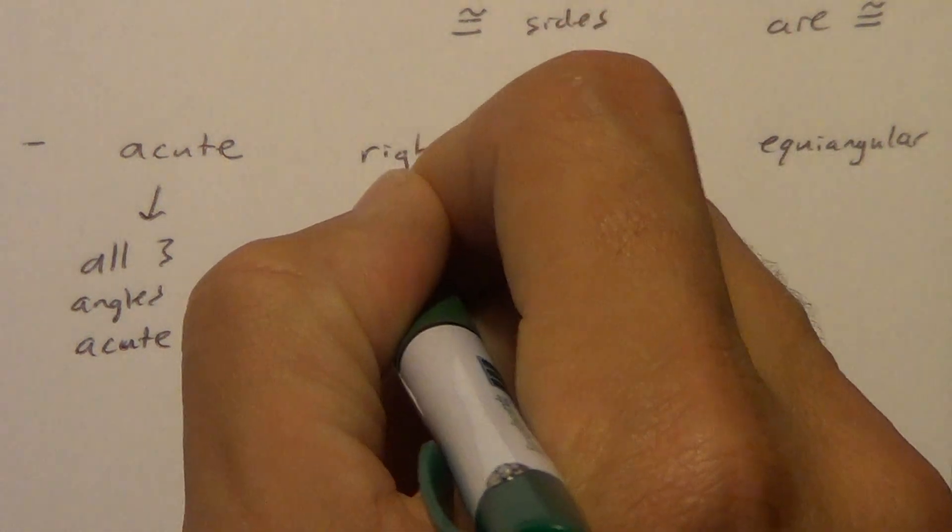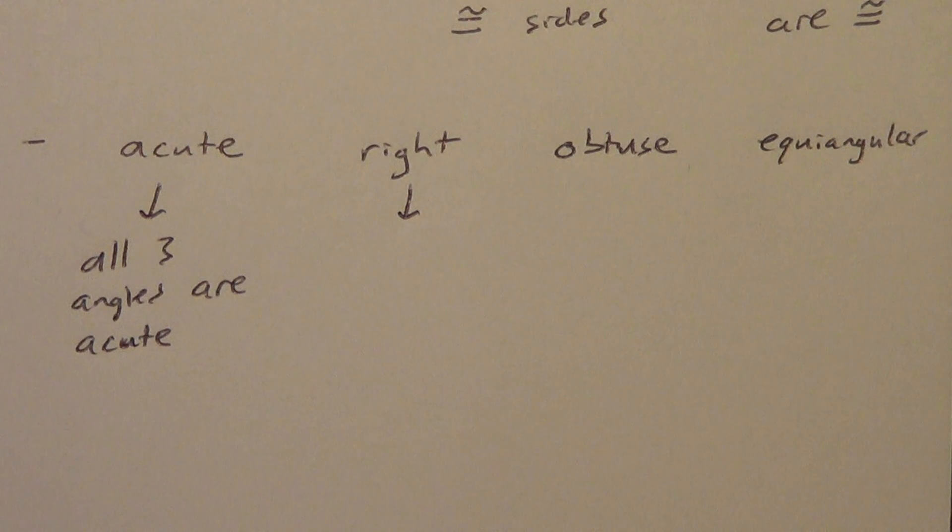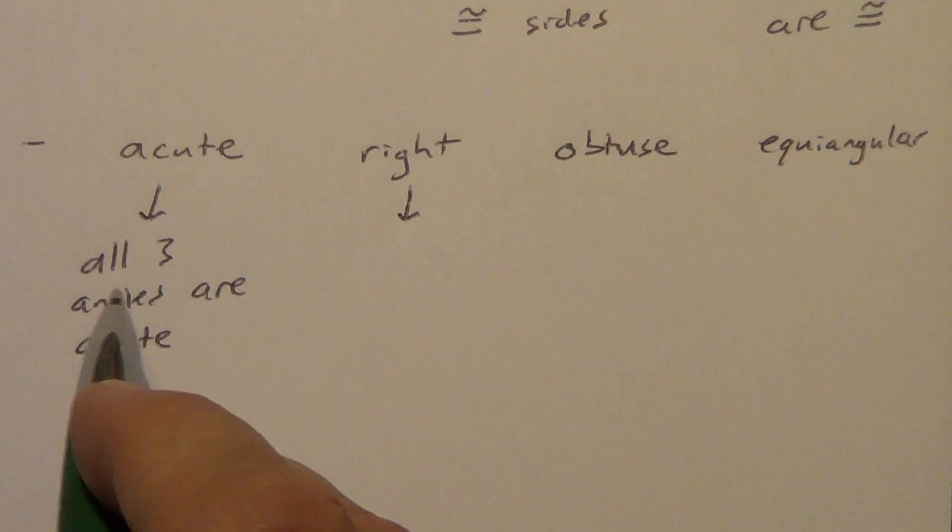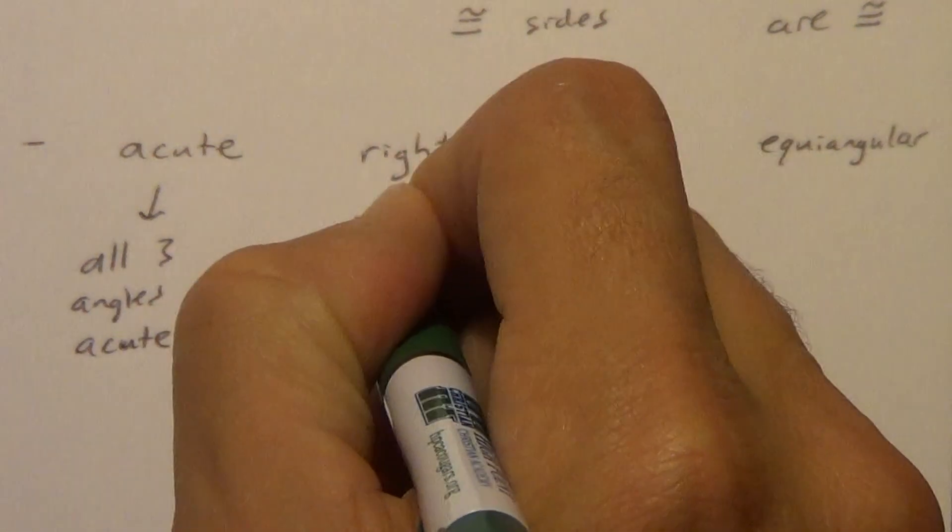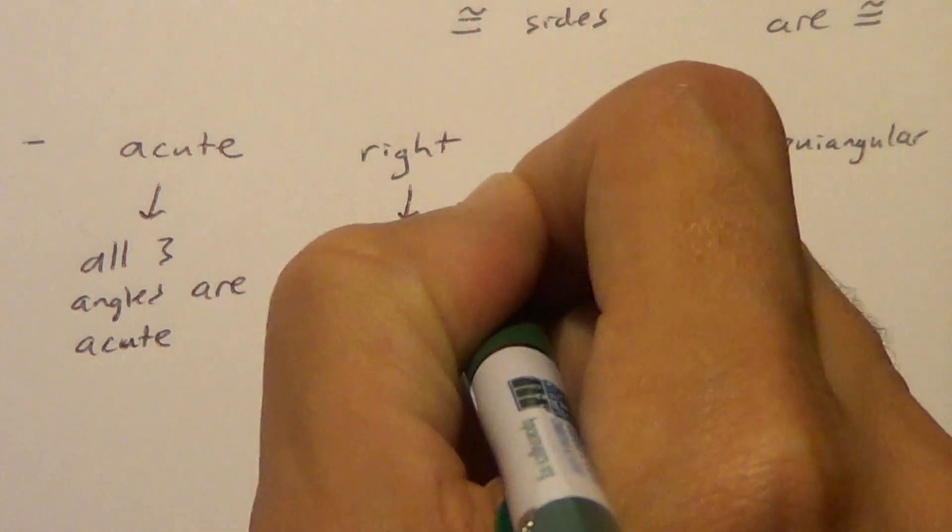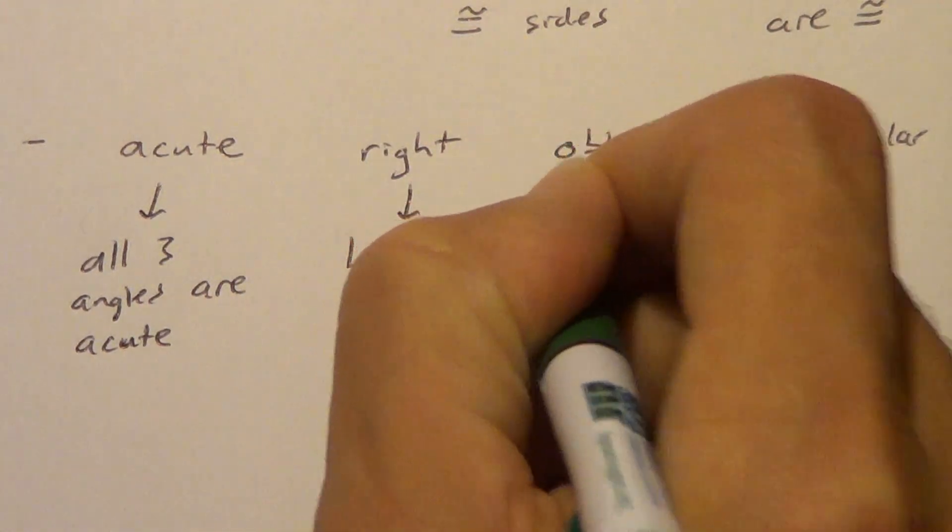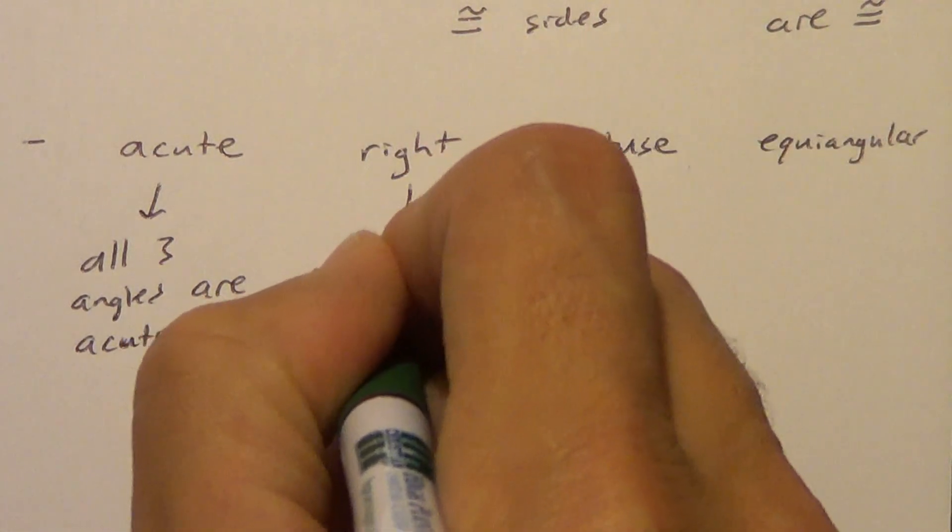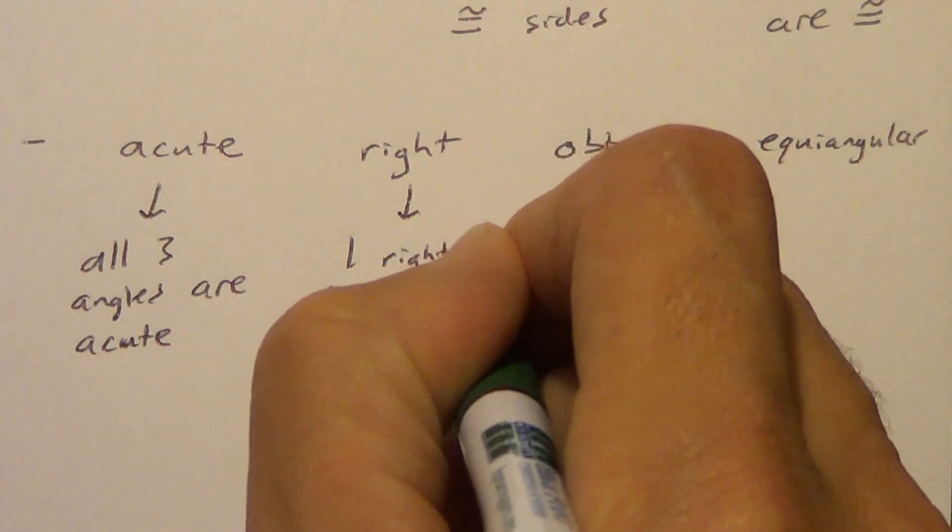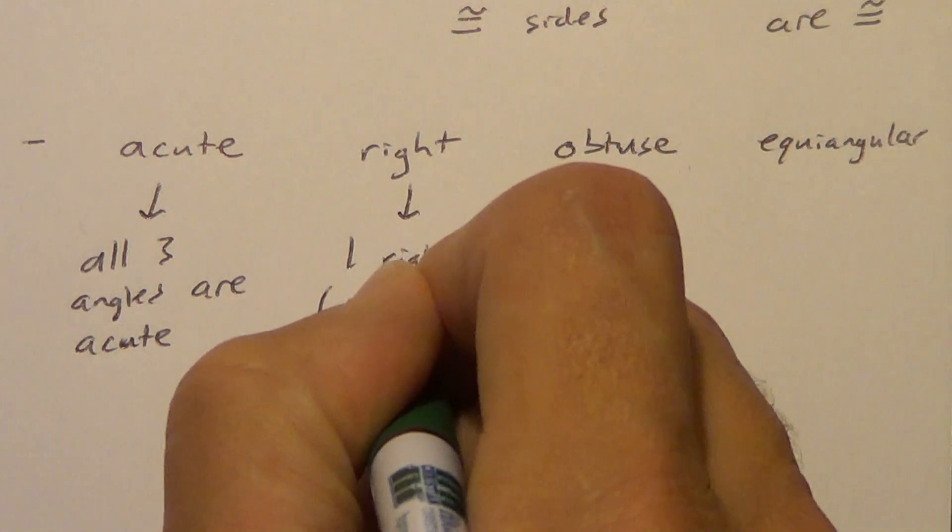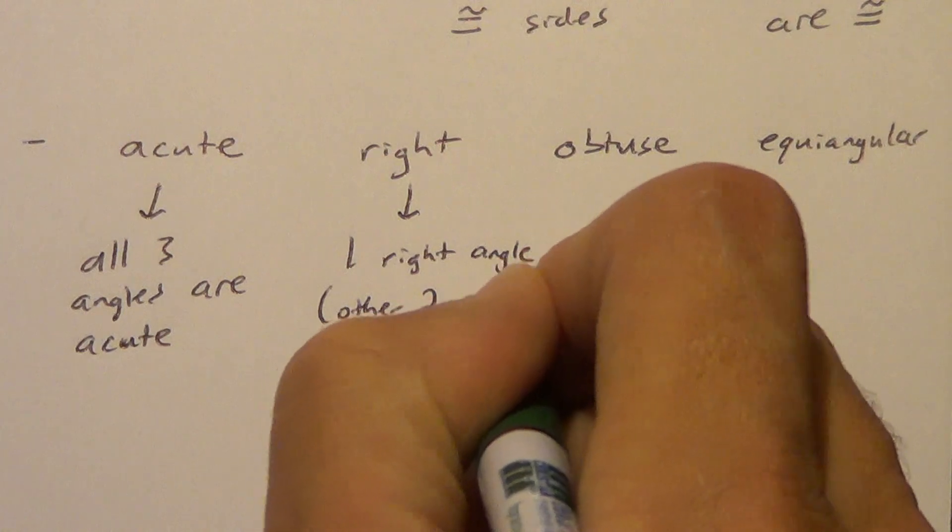Okay, a right triangle. It doesn't have three right angles. Okay, an acute triangle has three acute angles. A right triangle has one right angle. And now if you want to put a little note, the other two are still acute.